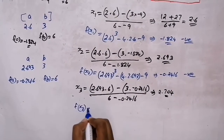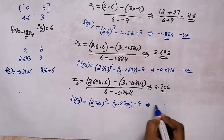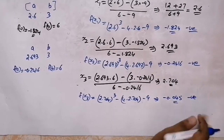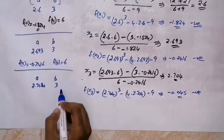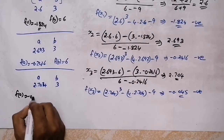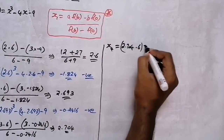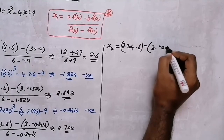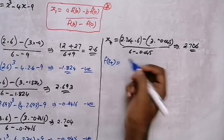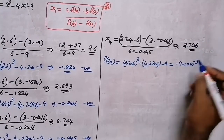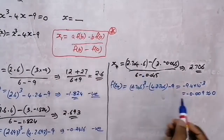We find f(x3) by replacing x with 2.704: 2.704³ − 4(2.704) − 9 = −0.045, which is again negative. So we replace interval a with 2.704; b remains 3, f(b) = 6, and f(a) = −0.045. Substituting into the formula again gives x4 = 2.706. Then f(x4) = −9.4 × 10⁻³ ≈ −0.009, which is approximately equal to 0. So we have found the root as approximately 2.706.